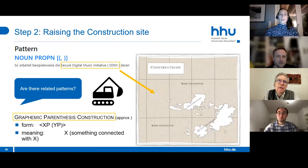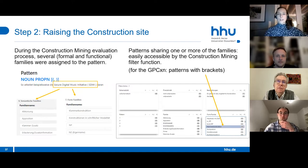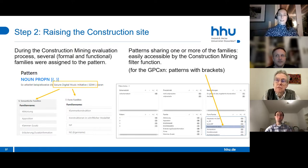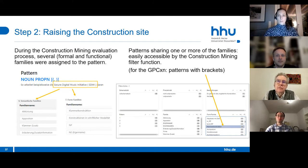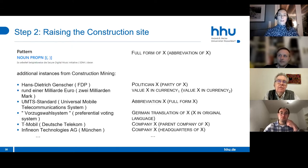The question is whether this is a small isolated pattern or whether there is a more general graphemic parenthesis construction with a broader form—XP followed by YP in brackets—and a broader meaning of X and something connected with X. Construction mining provides these answers because during evaluation we assigned formal and functional families to the patterns—abbreviation, apposition, bracket construction, noun phrase, proper name—and patterns sharing those families are easily accessible via the construction mining filter function.